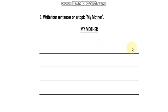Then you will write: my mother cooks food for me, I love my mother, my mother helps me in my studies. You can also write that my mother likes this color, or my mother goes to the market with me. You can write anything about your mother in this paragraph.